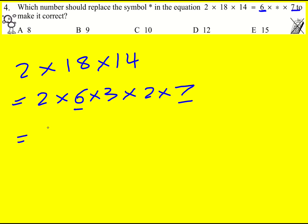So I could rewrite this as 6 times whatever these 3 multiplied together are. 2 times 3 is 6, 6 times 2 is 12. So this is going to be 6 times 12 times 7. Therefore the missing asterisk must be 12.